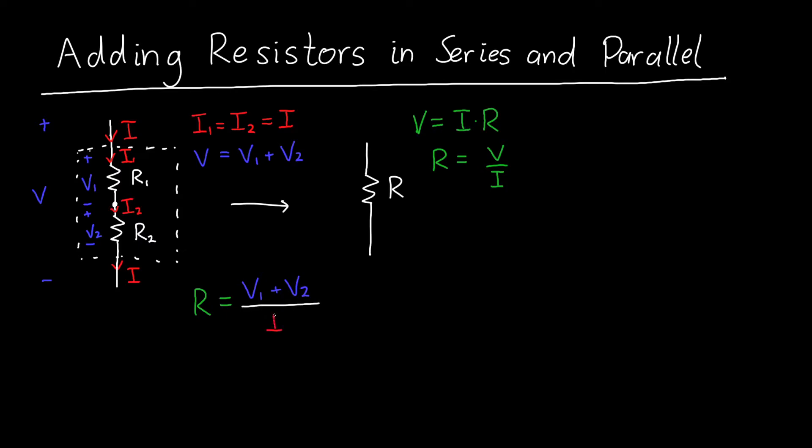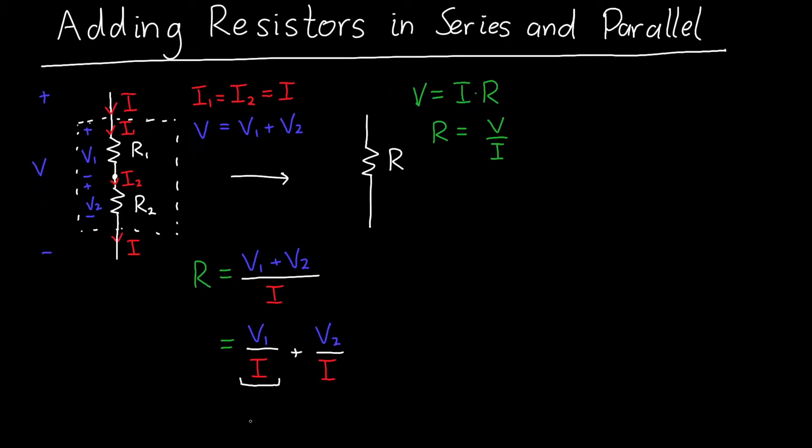Which is just I. It's the same current as is flowing through all of the resistors here. And this is equal to V1 divided by I plus V2 divided by I. And notice that this is just the resistance of our first resistor, this is just R1, and this is just the resistance of our second resistor. So the overall resistance of this element, of this new composite resistor, is the sum of the two resistances R1 plus R2.